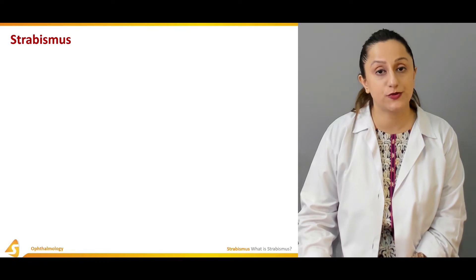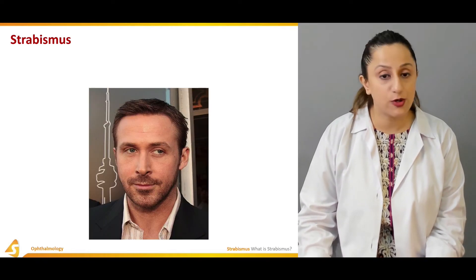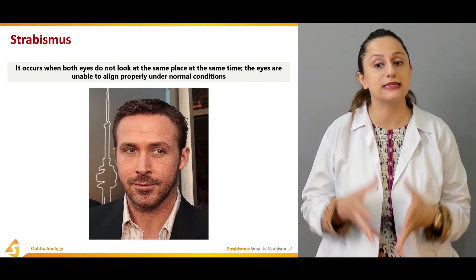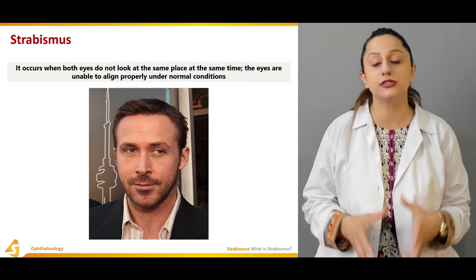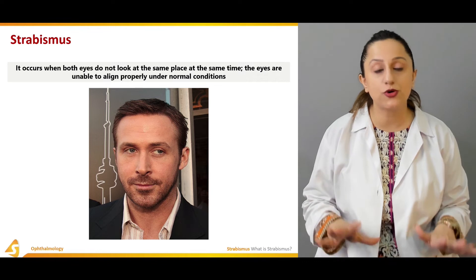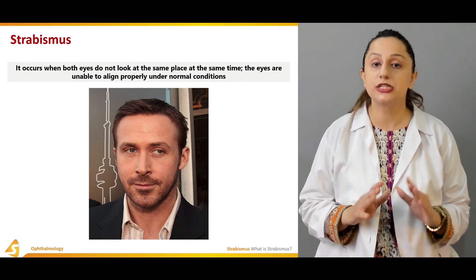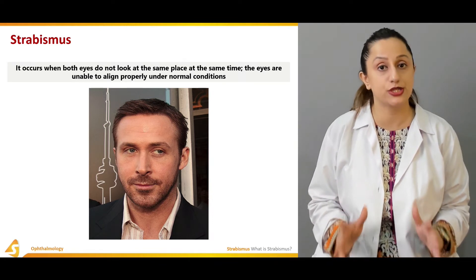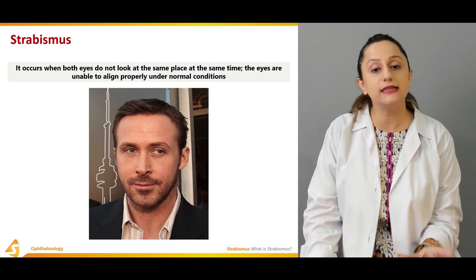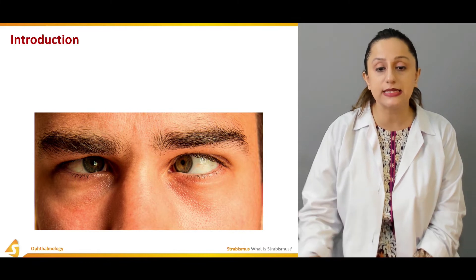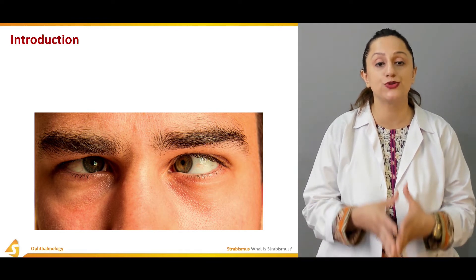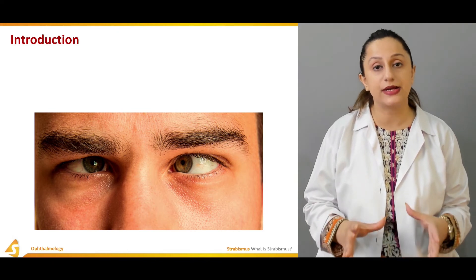Moving to the definition of strabismus: it occurs when both eyes do not look at the same place at the same time — the eyes are unable to align properly under normal conditions, without trauma or nerve damage. The eyes may turn in, out, up, or down. The misalignment can be present in one eye — a unilateral condition — or in both eyes, such as when both eyes are deviated medially.